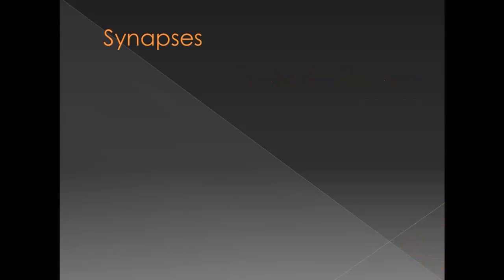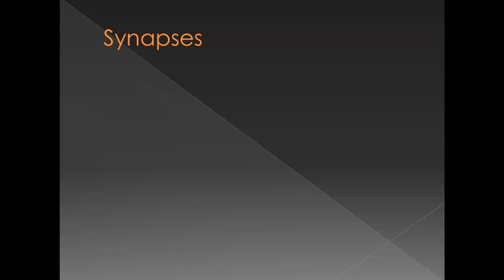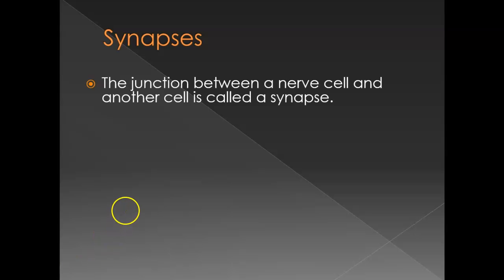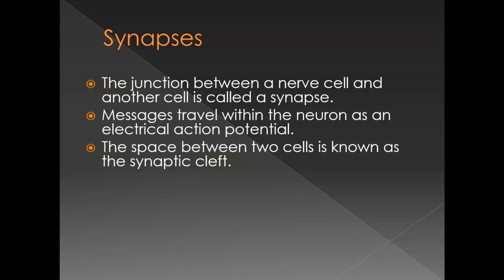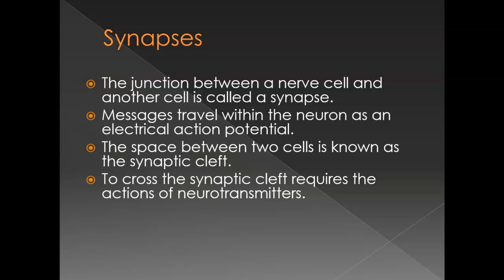Now what? We have the connection between one neuron to another neuron, or from a neuron to a muscle, or a neuron to a gland. So we have this synapse — the junction between a nerve cell and another nerve cell. The action potential gets there but it can't jump the space. There is a small space from one cell to the next: that is the cleft, the synaptic cleft. To cross that requires chemicals, and that's what the neurotransmitters do — they allow the crossing of this synaptic cleft.